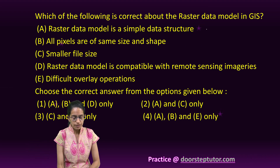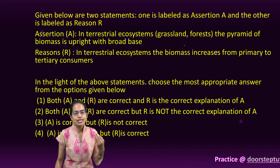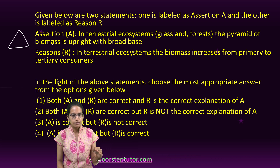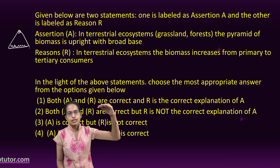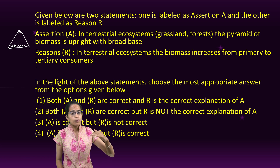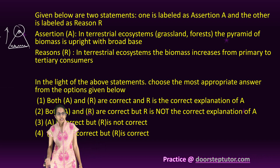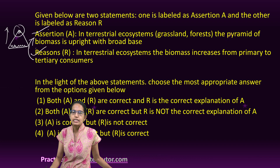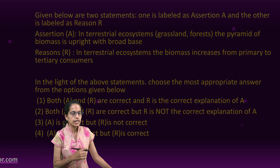Raster and vector models are covered extensively in the book on GIS and Cartography, which is part of the course material — refer that carefully. The next question is on the terrestrial ecosystem. The pyramid of biomass is upright with a broad base — correct, because in grassland you have a large number of grasses and very few top predators like lions or cheetahs. Biomass increases from primary to tertiary consumer, so the reason correctly explains the assertion, and both are independently correct.